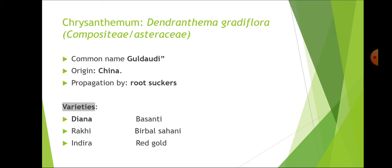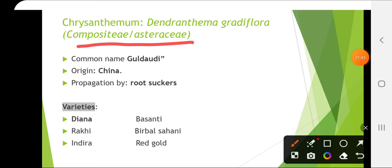Chrysanthemum, that is Dendranthema grandiflora, belongs to the family Compositae or Asteraceae. Common name is Guldaudi, origin China, propagation by root suckers. Important varieties include Dhyana, Rakhi, Indira, Basanti, Birbal Sahani and Red Gold.